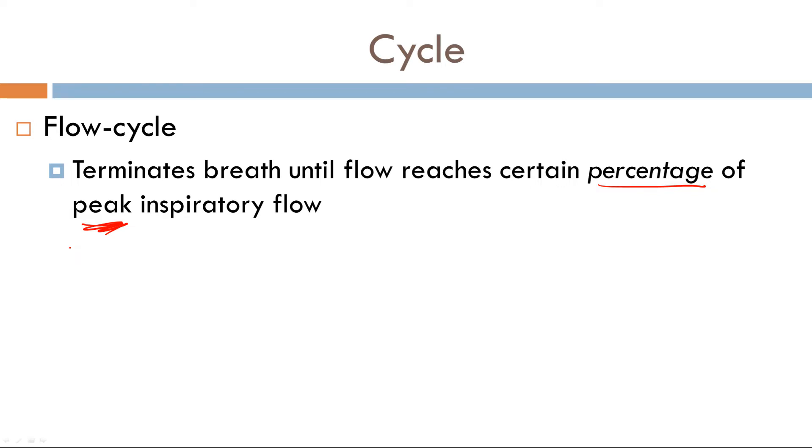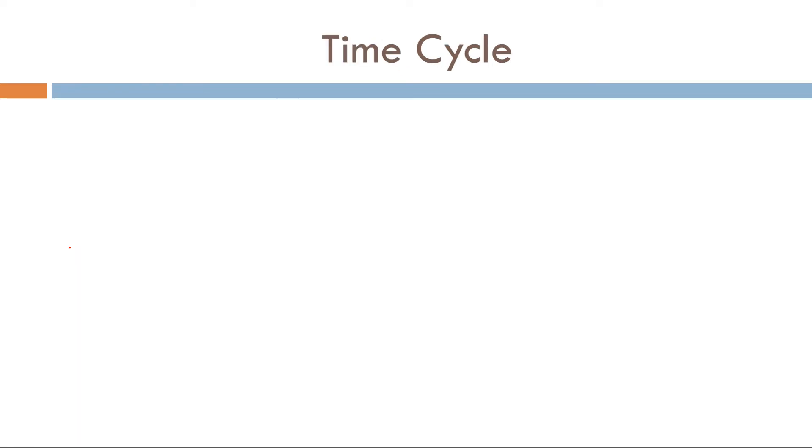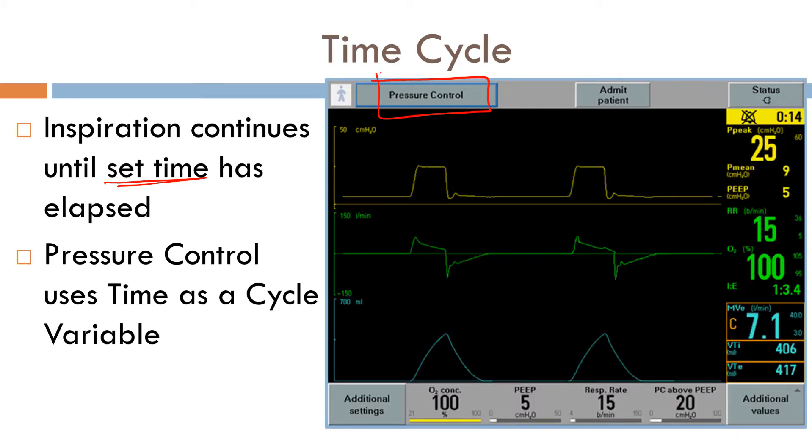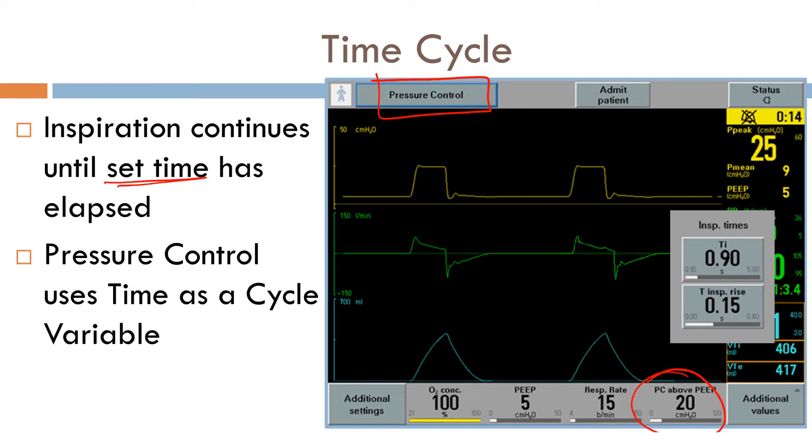We'll talk about what that means in a minute, but let's go over time cycle. The definition is inspiration will continue until a set time has elapsed. So interestingly enough, in pressure control ventilation, the cycle variable is time. As we can see, we're in pressure control. So just to recap, what is our target variable in pressure control ventilation? It's pressure. Now the cycle variable in pressure control is time. I had alluded to this before.